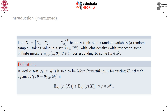Now we want to give the definition of the most powerful test. A level alpha test phi naught belonging to M_alpha is said to be most powerful — abbreviated as MPT — for testing H naught: theta belongs to Theta naught against the alternative theta equals theta1, not belonging to Theta naught, if E_{theta1}[phi naught(x)] is greater than or equal to E_{theta1}[phi(x)] for all phi belonging to M_alpha. Most powerful means it has maximum power against a particular alternative theta equals theta1 among all tests of level alpha.